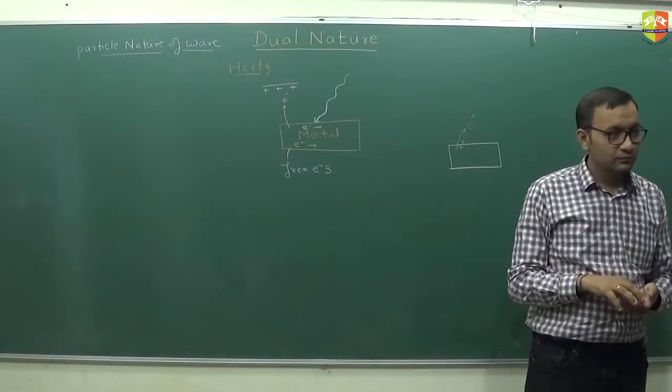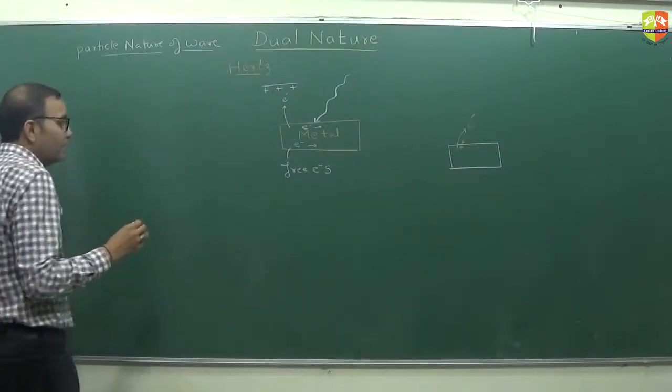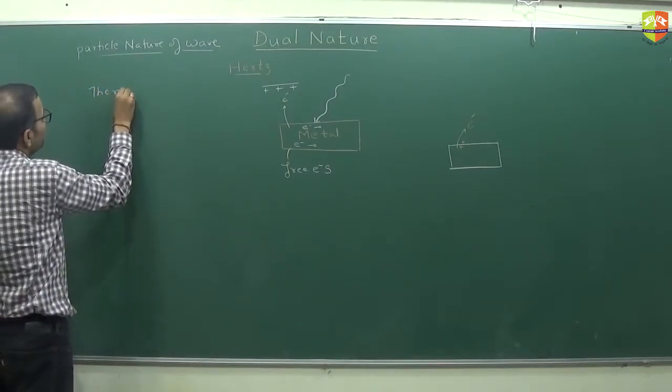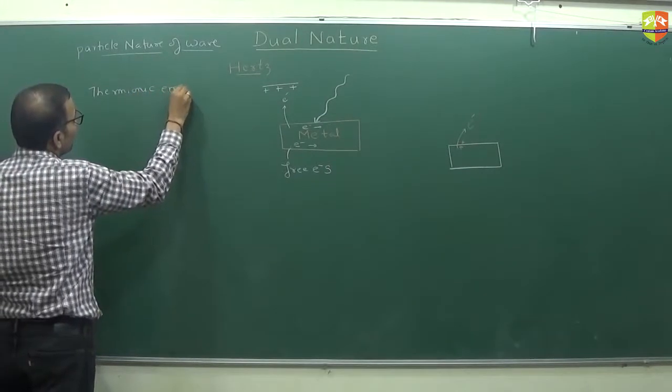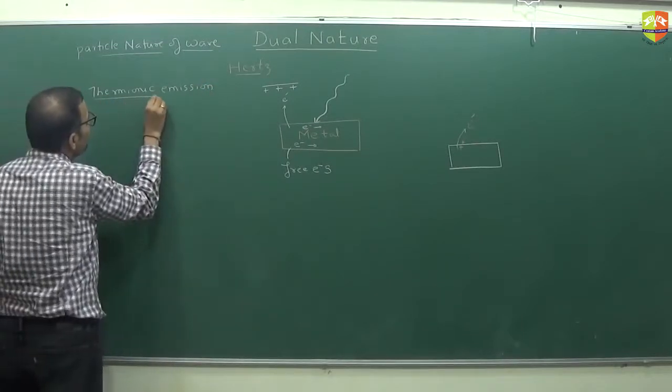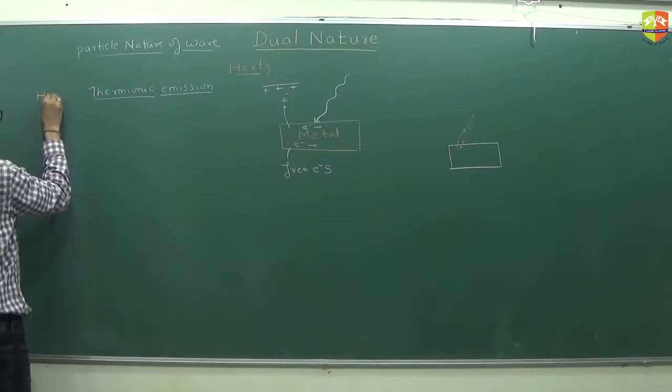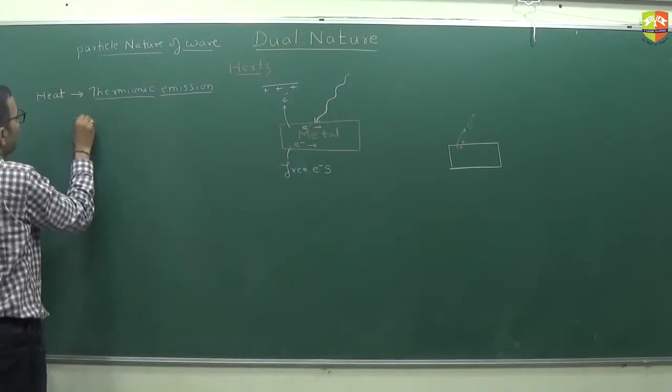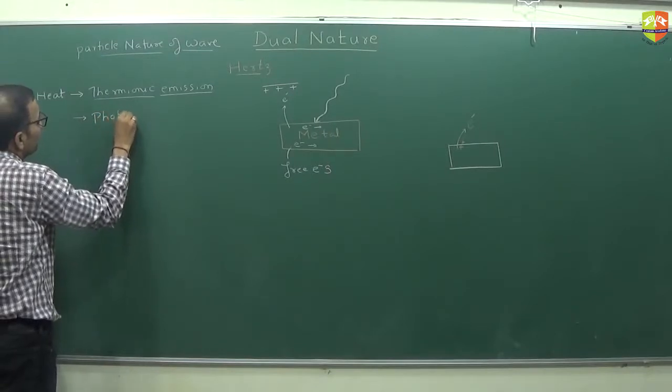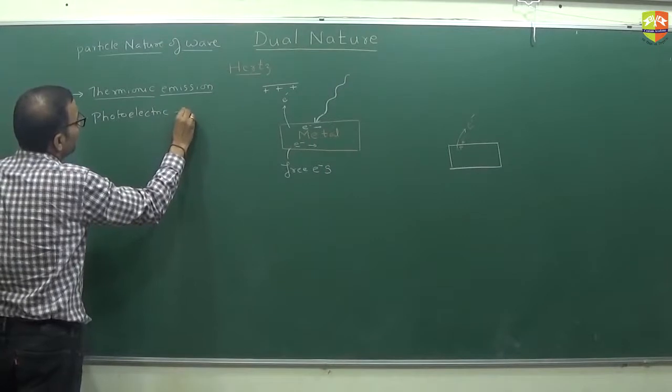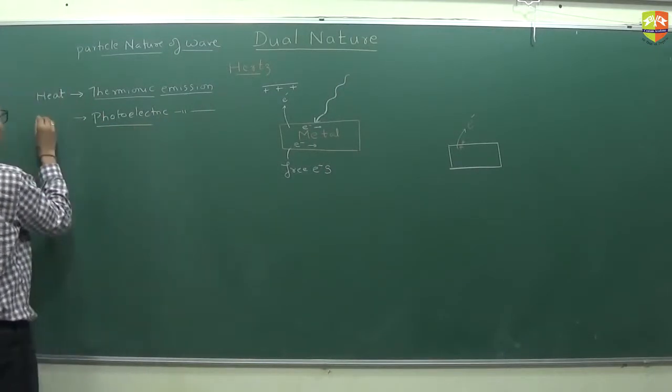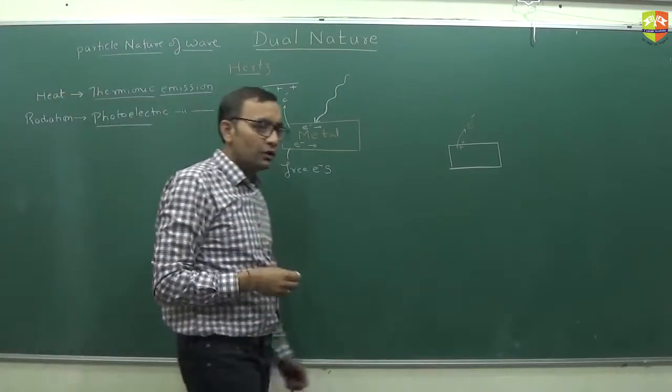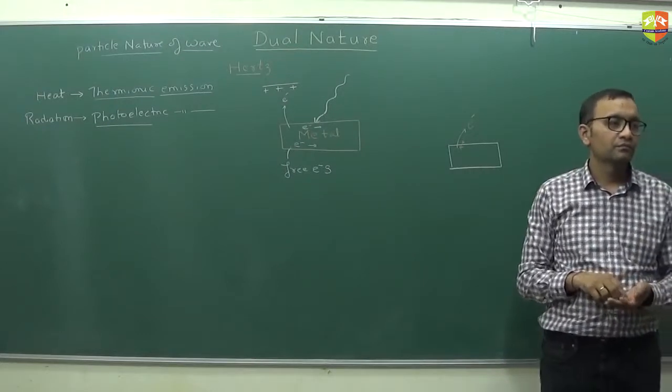When you heat the surface, few electrons will get energy and they will be able to come out. And the emission, that kind of emission is called thermionic emission. Thermionic emission happens when you provide energy in the form of heat. This is called photoelectric emission. The example which we have taken is called photoelectric emission, when you give energy in the form of radiation. Is there any other way to give the energy?